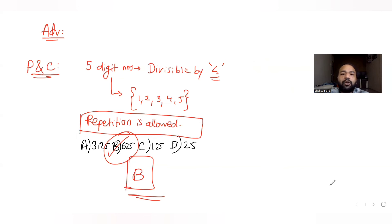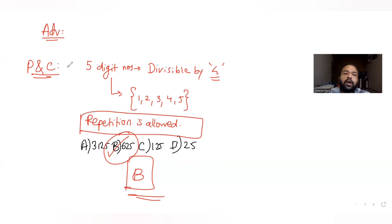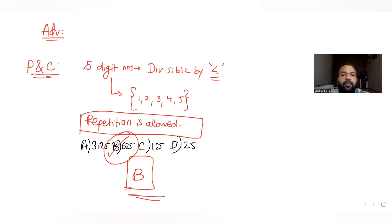I hope you have understood how to solve this type of question on permutations and combinations dealing with the number of 5-digit numbers we can form. I'll meet you again tomorrow with questions from another topic, continuing our series on JEE Advanced. Do like, comment, and subscribe to my channel, and share these videos with friends who are also preparing for JEE Advanced.